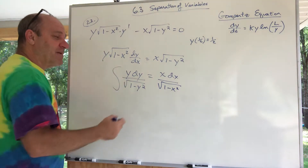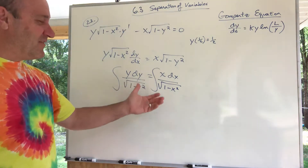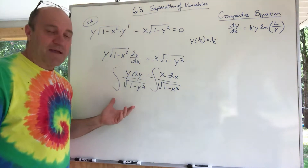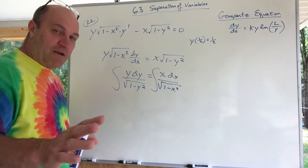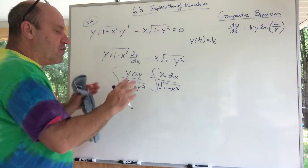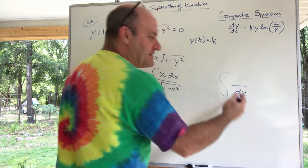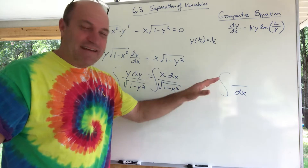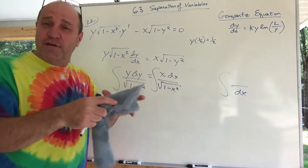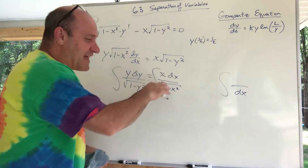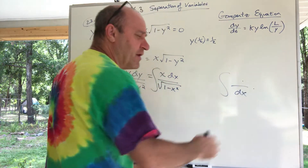I'd like to integrate both sides. You may notice they're the same integral — just one has y's and the other has x's — so I only need to work out one of them. A quick comment: during separation, dy and dx always end up in the numerator. You never end up with a dx in the denominator — you can't integrate with a dx in the denominator. It's off to the side or in the numerator. That's how you always set these up.